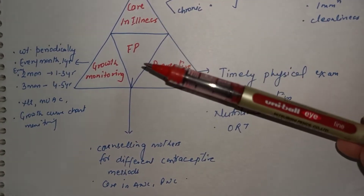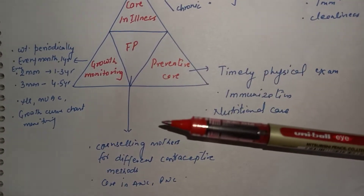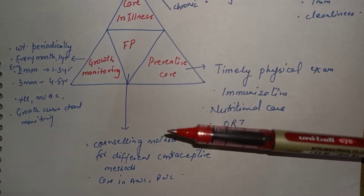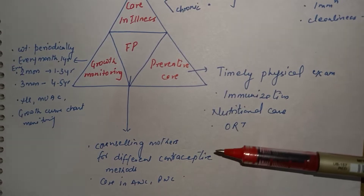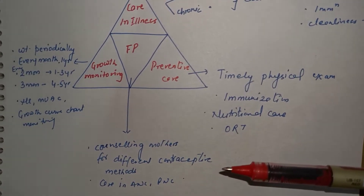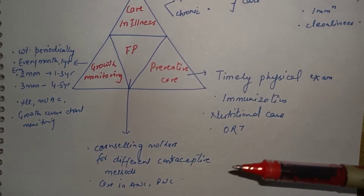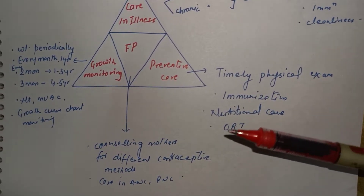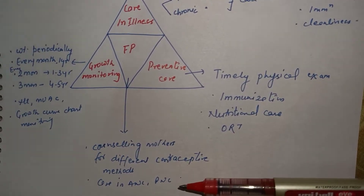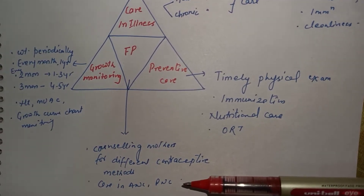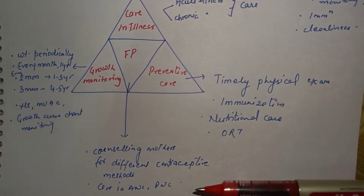For family planning, we educate the mother about different contraceptive methods that they can use to maintain a gap between children. This also includes care in ANC (Antenatal Care), PNC (Postnatal Care), and other related services.